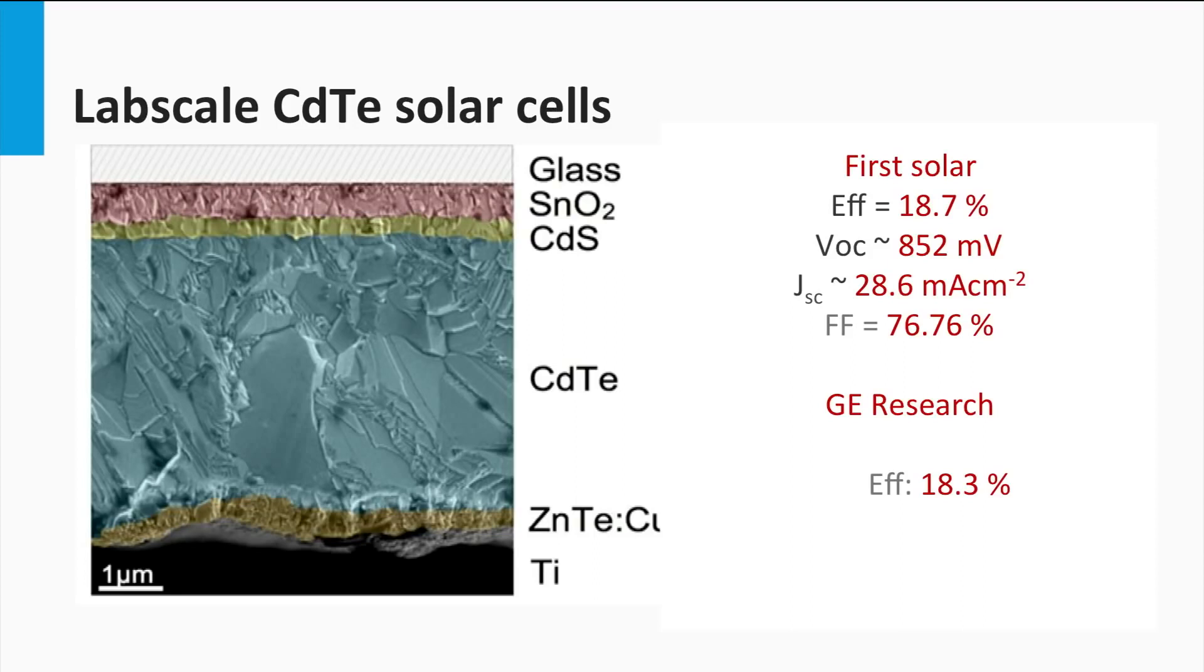The record conversion efficiency of lab-scale solar cells is 18.7% as obtained by First Solar in 2013. The open circuit voltage of the record cell is 852 mV, the short circuit current density is 28.6 mA per square centimeter with a fill factor of 76.7%. General Electric achieved in the same year an efficiency of 18.3%.